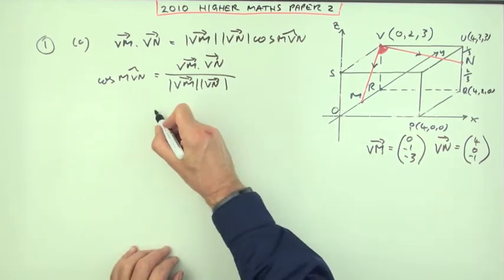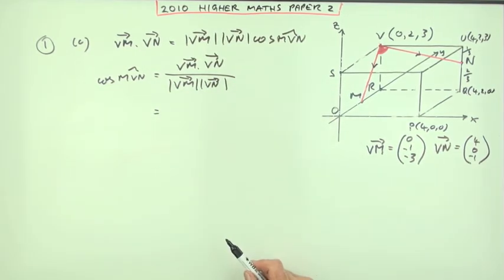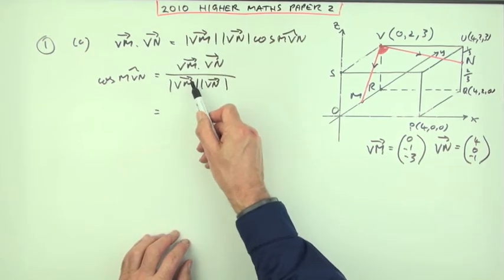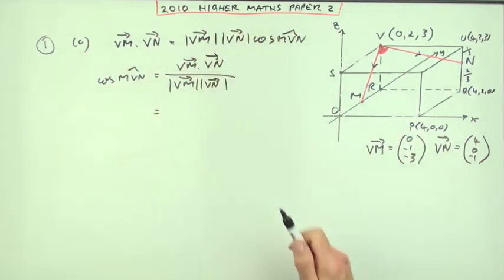So that would mean evaluating the scalar product the component way divided by the magnitudes. Now there's two ways you could set this out. You could either, at the side, work out the three parts, the scalar product, the magnitude of one, and the magnitude of the other, and then put them back into this, or just plop it all down in one.